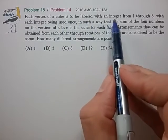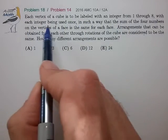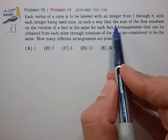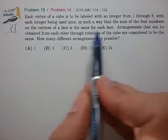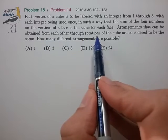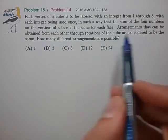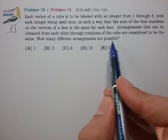Each vertex of a cube is to be labeled with an integer 1 through 8, with each integer being used once in such a way that the sum of the four numbers on the vertices of the face is the same for each face. Arrangements that can be obtained from each other through rotations of the cube are considered to be the same. How many different arrangements are possible?